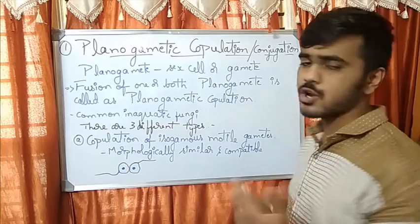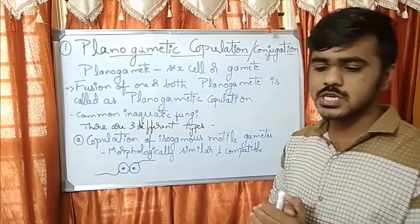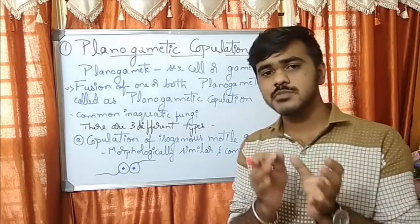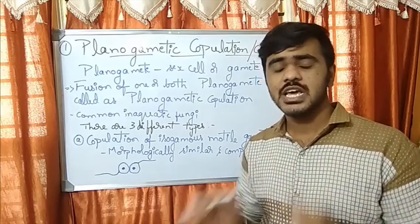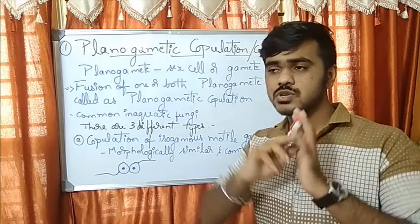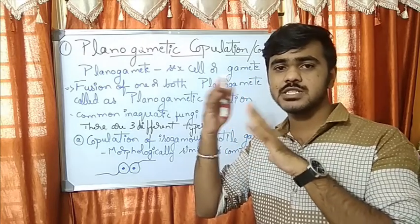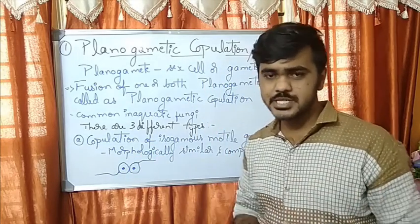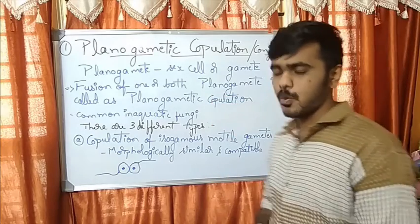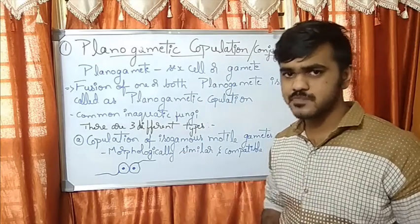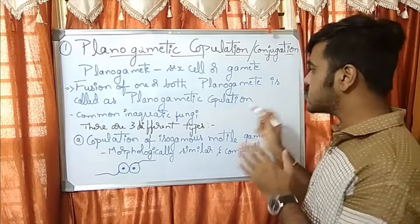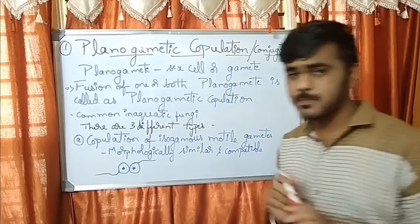The very first method is planogametic copulation, or conjugation. The word conjugation is also used in bacteria, but whenever a term is used in two different situations, it depends on the context — we should not confuse the two meanings. In fungi, conjugation means a copulation. A planogamete is a motile gamete — it is a sex cell or gamete that is motile.